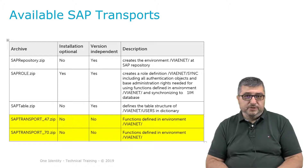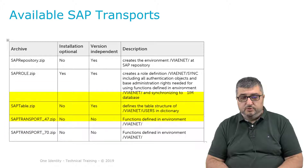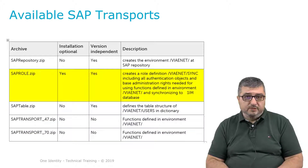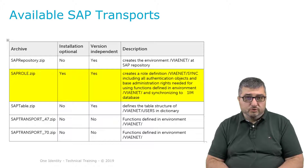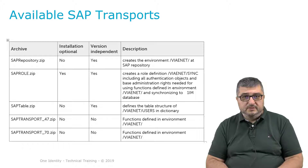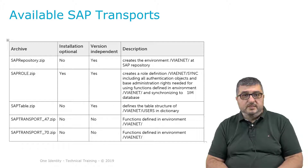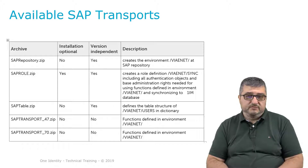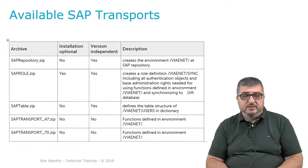There is also a distinction between Unicode and non-Unicode systems for that third transport. The fourth and final transport is optional — it is a convenience transport provided for customers who don't want to create their own roles and grant permissions to the service account manually. This SAP role can be imported and assigned to the service account the connector will use. If the customer has specific requirements for how roles are named or maintained, they can create their own SAP role instead. The required permissions and authorizations for the service account are fully documented, and specifics can be configured as the customer sees fit.